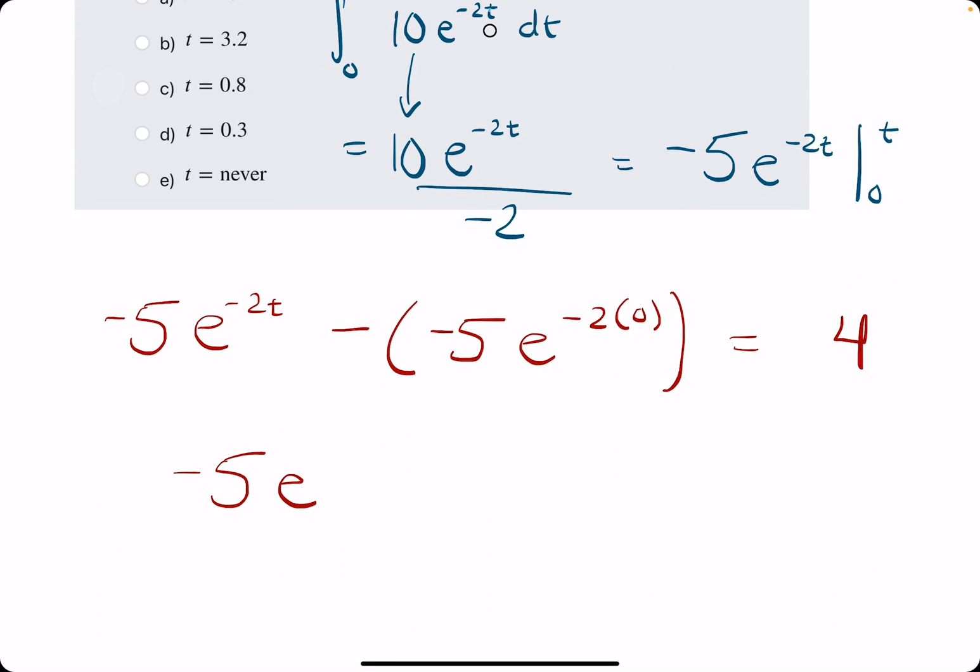Now our goal is still to solve for this t up here. The first thing we could do is, because it's a double negative, we have basically a plus 5 e to the negative 2 times 0. Negative 2 times 0 is just 0, and then e to the 0 is just 1, and then 5 times 1 is 5.